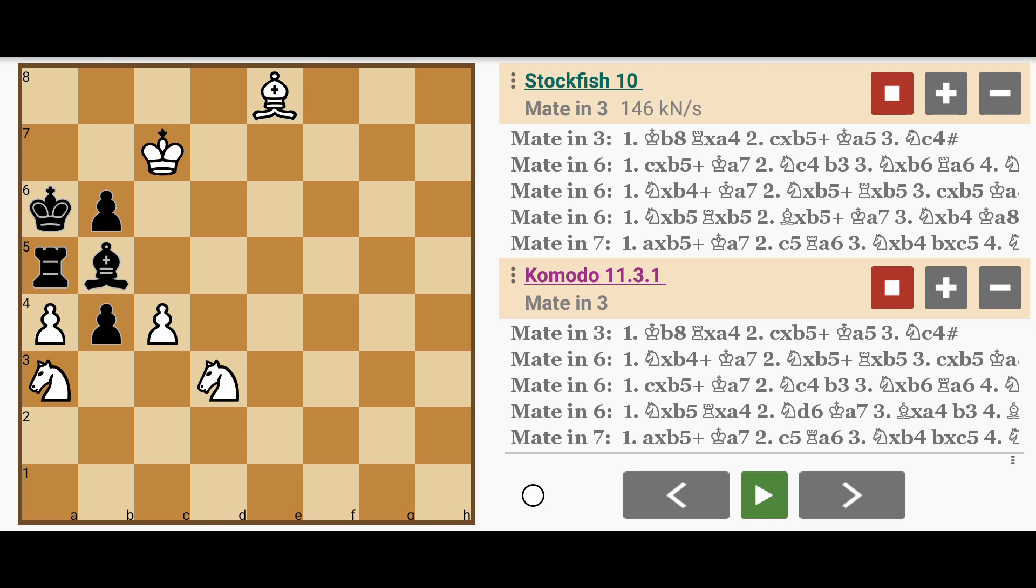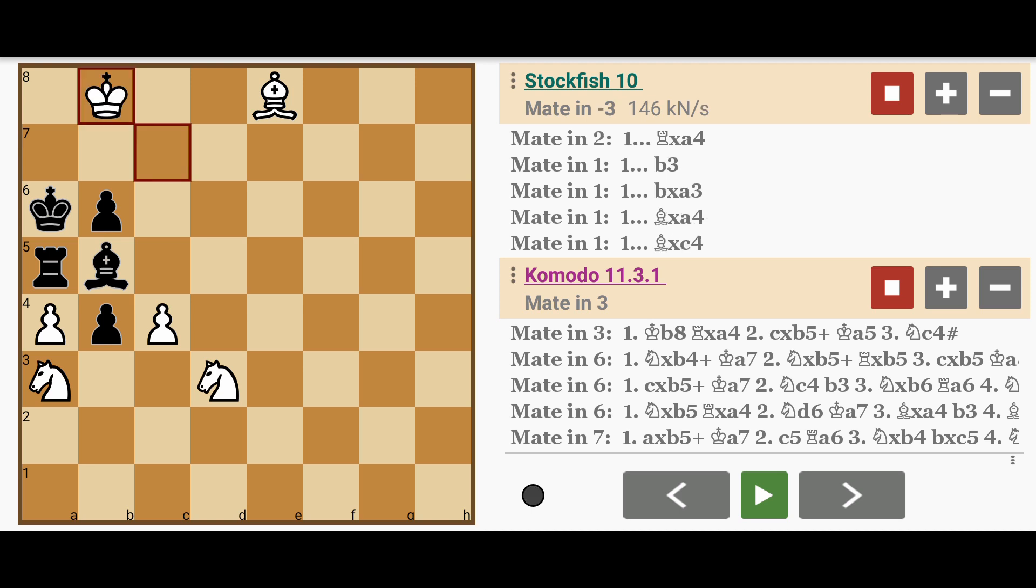So as you can see, there are other ways to win as well, many other ways, but the shortest one by far is the mate in 3, and it is the curious move King to b8.